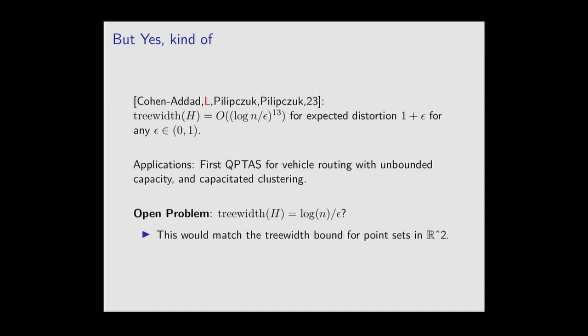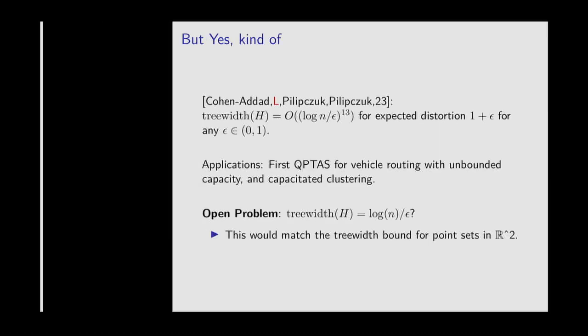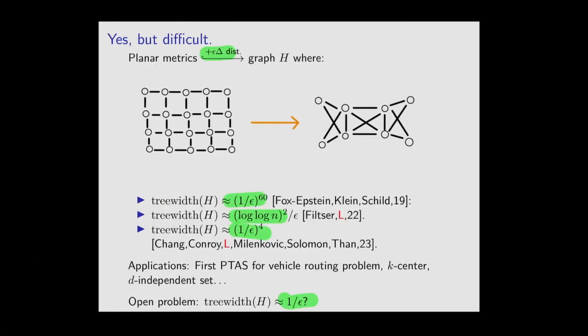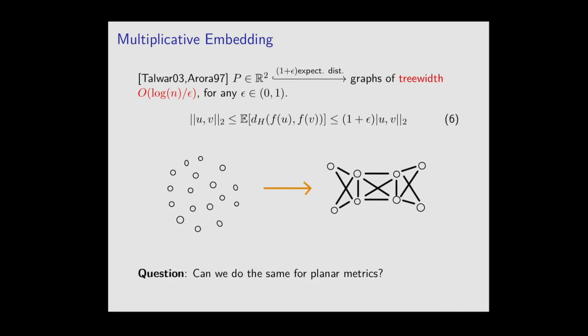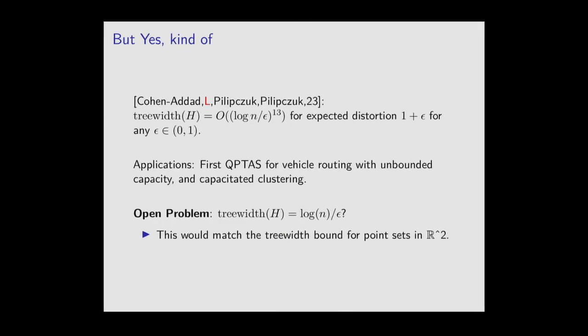This has a lot of applications. Once you have these embeddings, you get polynomial approximation schemes for many problems in planar graphs: vehicle routing, k-centers, and others. For this embedding specifically, we get something like the first QPTAS for vehicle routing with unbounded capacity, or the capacitated clustering problem.